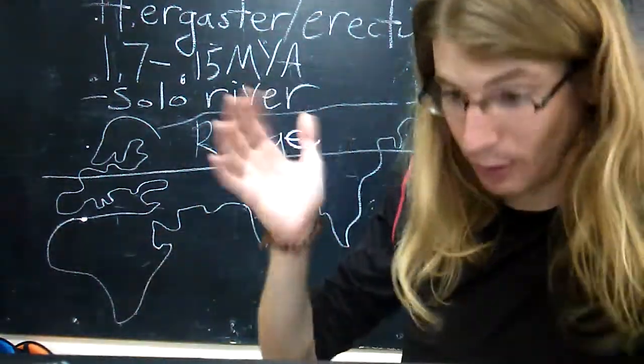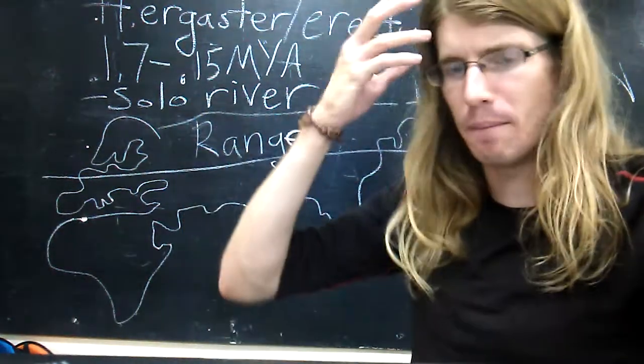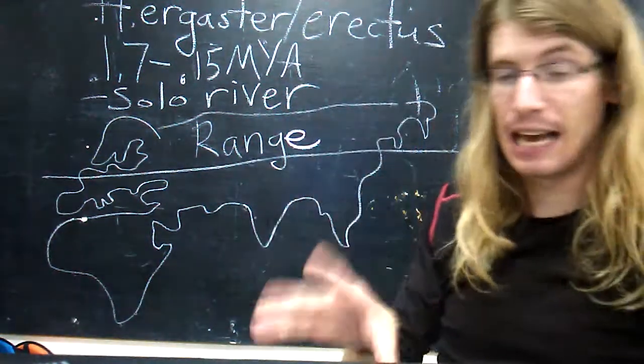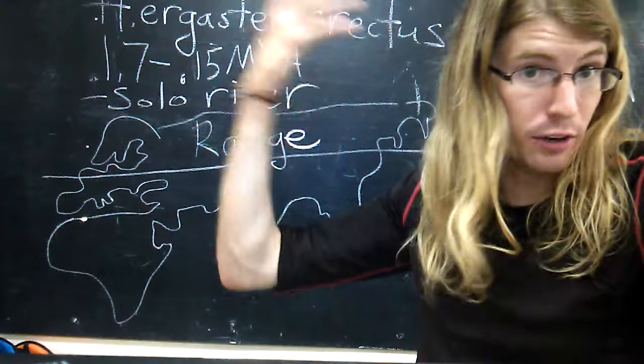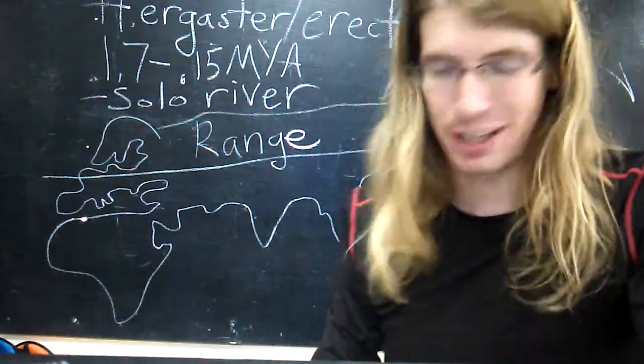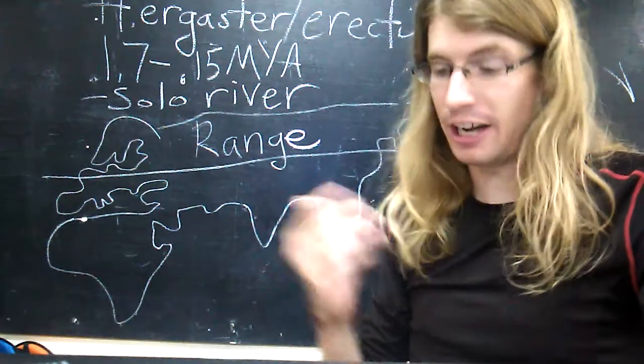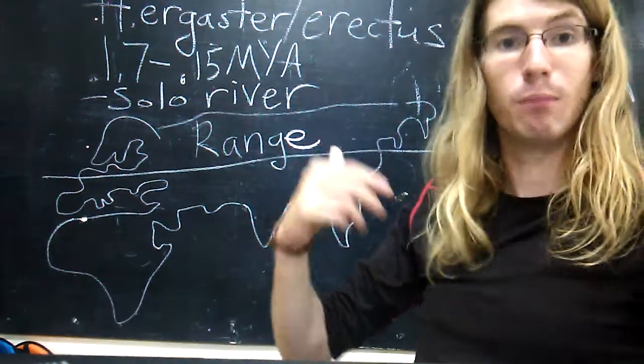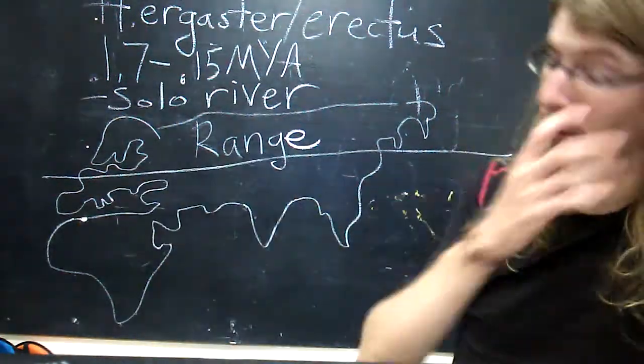Over the course of ergaster and erectus's existence, they did develop much larger brain capacity. That has led some experts to suggest that easily digestible cooked meat was available, which could have contributed to this expanding brain capacity. The excellent PBS Nova documentary 'Becoming Human' talks about how fire and cooking might have actually led ergaster and erectus to become more social, for example by sharing fires for cooking and warmth.